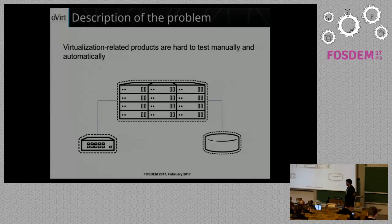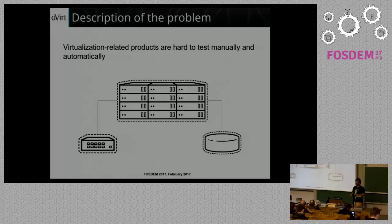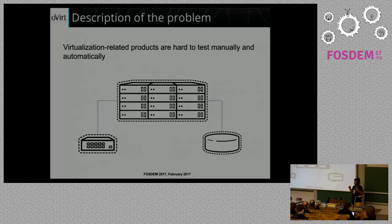Let's start by describing the problem we are actually trying to solve. Basically, virtualization products are complex. They are complex in the sense that they always have lots of integrations - for example, we need to integrate with storage, with network. And when you get some bug or some new feature that requires you to rebuild the environment to test, you need to reproduce the environment. Sometimes you can take a really long time building this environment. Personally, I already spent more than one day trying to reproduce the environment to fix a bug.